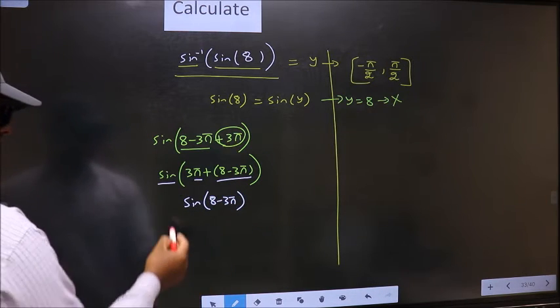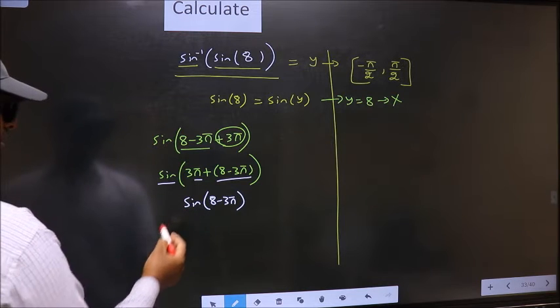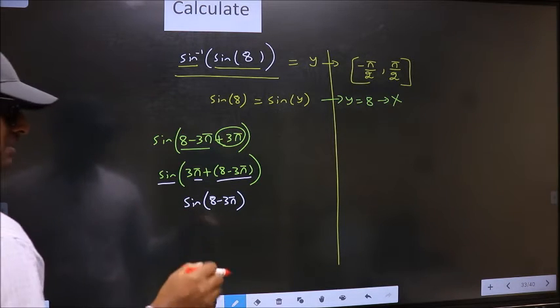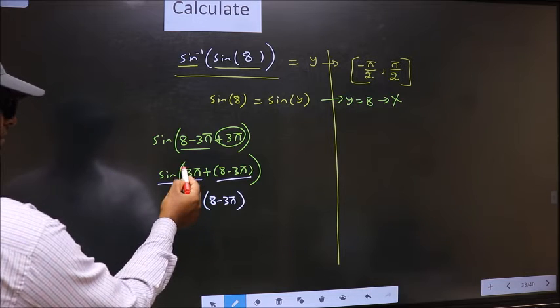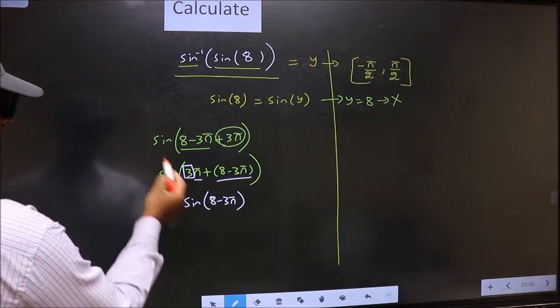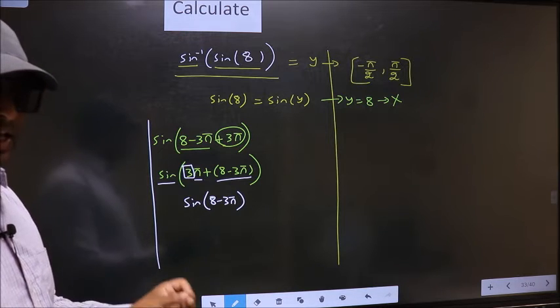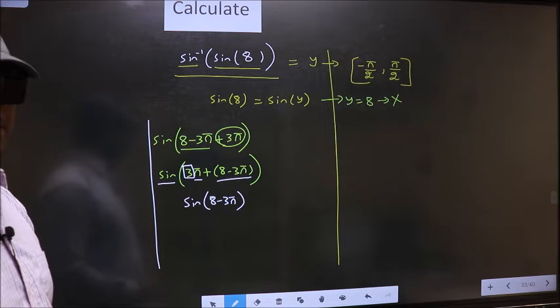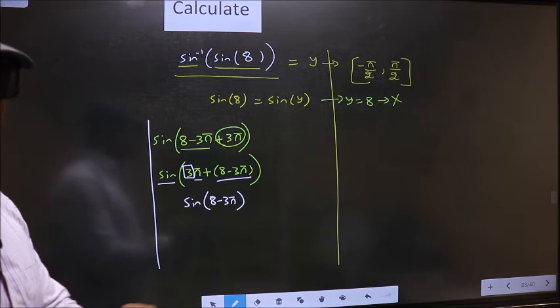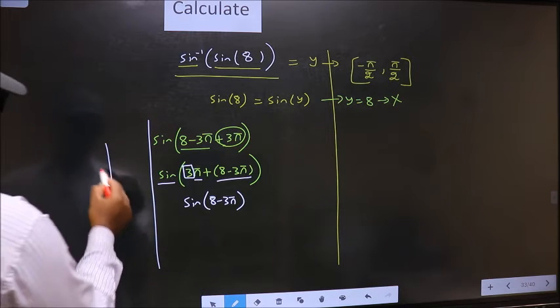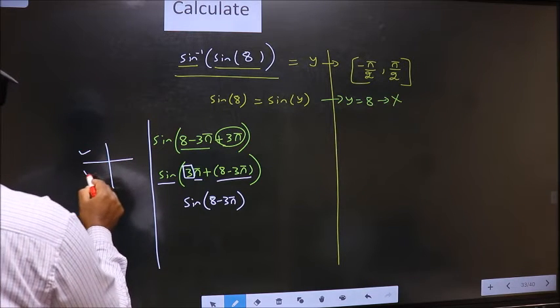Now the question is will we get here plus or minus. To answer that we should look at the number before pi which is 3. And 3 is odd. And all the odd multiples of pi, they lie in either the second or the third quadrant.